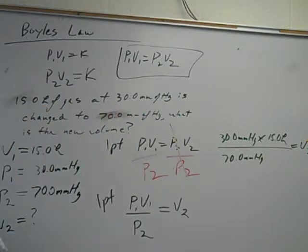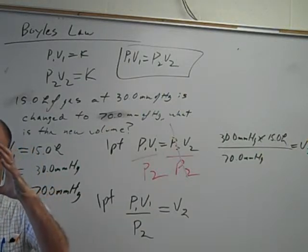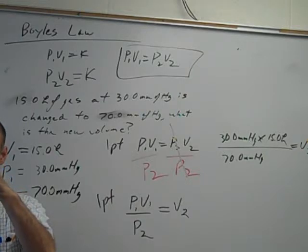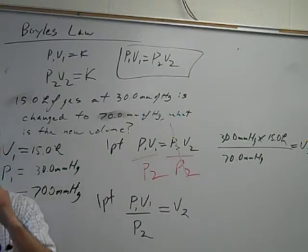And now we can plug in the numbers. So P1 is 30 millimeters of mercury times V1, which is 15 liters, divided by 70. And before you even calculate, you should be asking yourself what answer would make sense. My pressure is getting bigger. So if my pressure is getting bigger, imagine you're a balloon, Sam. You're squeezing a balloon. What's happening to the pressure? Going up. What's happening to your volume? Decreasing.